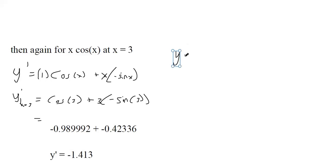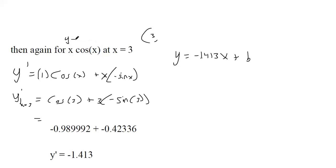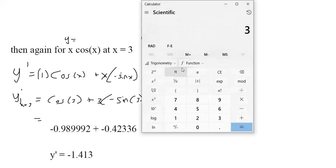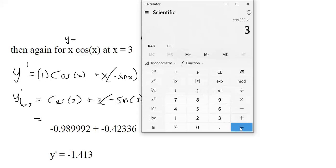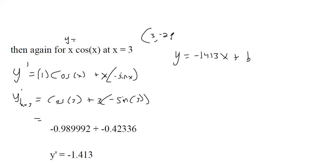The tangent line has that slope, so we just need the y-intercept. We need a point — we have the x-coordinate, so plug x = 3 back into the original equation y = x·cos(x). That gives 3·cos(3) ≈ −2.97, which is the y-coordinate. This is now just algebra — we've already done the calculus part, which was finding the instantaneous slope using the derivative.